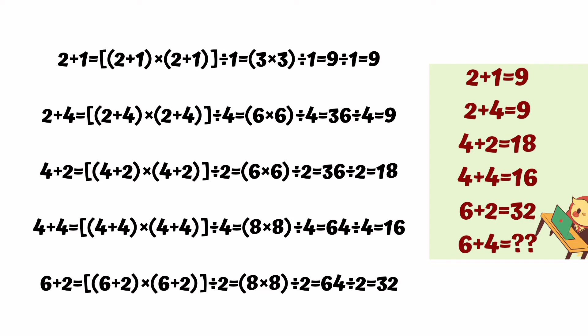Similarly, you can see third row value is 4 plus 2. Add them, answer will be 6. Multiply 6 into 6 is 36, divide by 2 is 18. Similarly, 4 plus 4, answer will be 64 divided by 4 equals 16. Last row is 6 plus 2, so that will be satisfied.